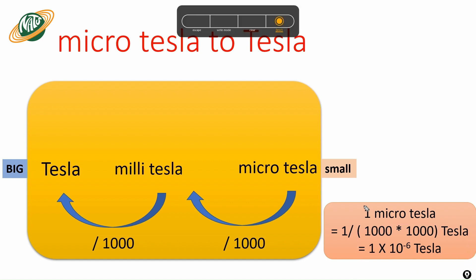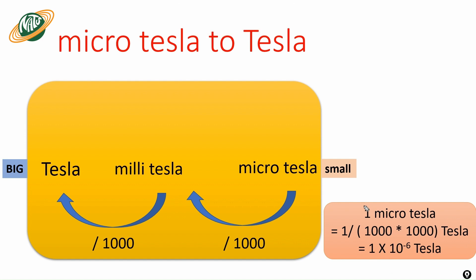In summary: if you want to convert bigger unit to smaller unit, we multiply; if you want to convert smaller unit to bigger unit, we divide. If you are jumping one level — for example tesla to millitesla — multiply or divide by one thousand. For two levels — millitesla to microtesla — apply the factor twice.